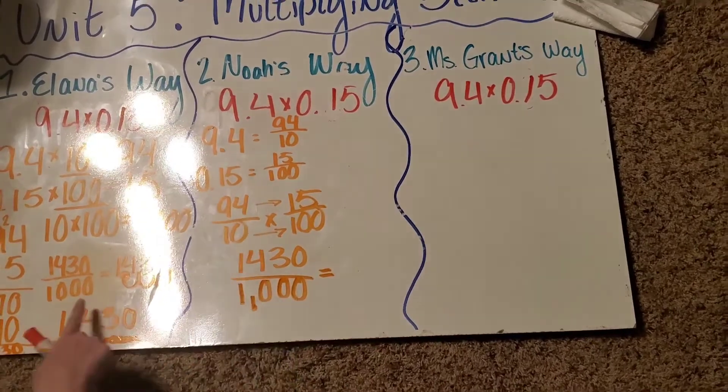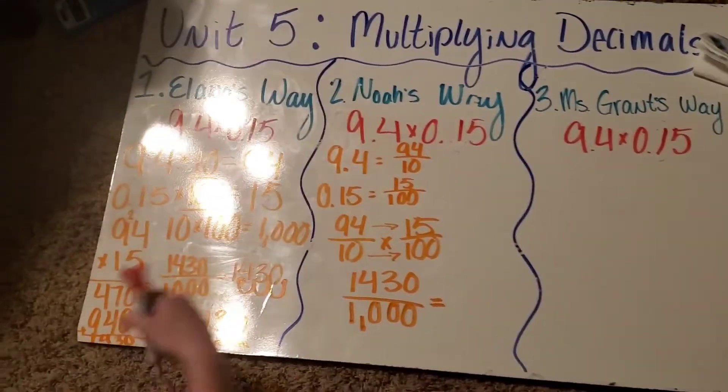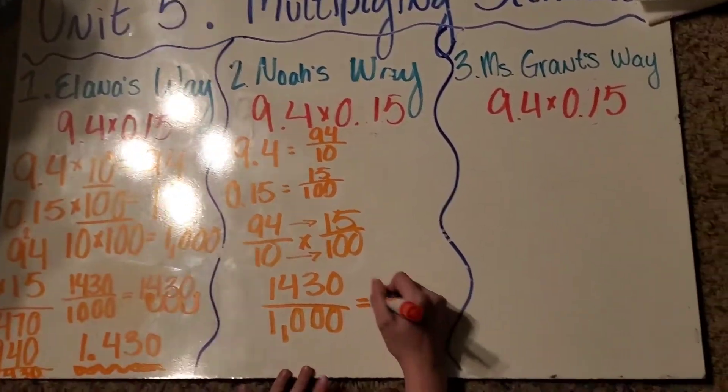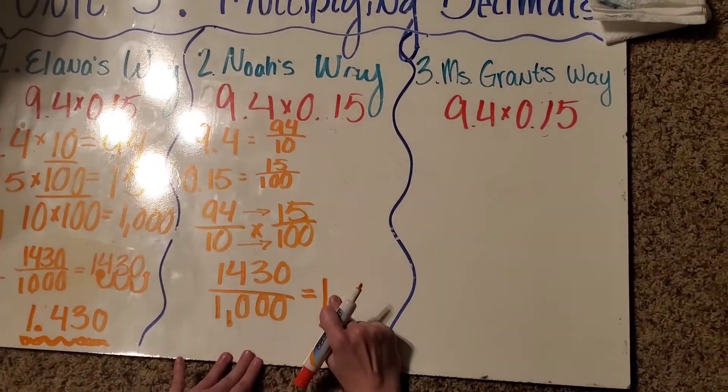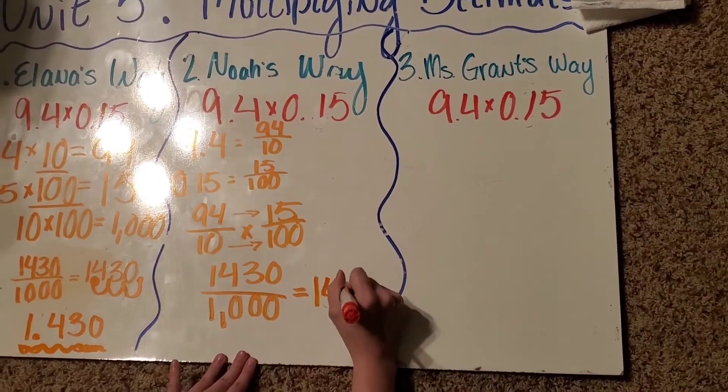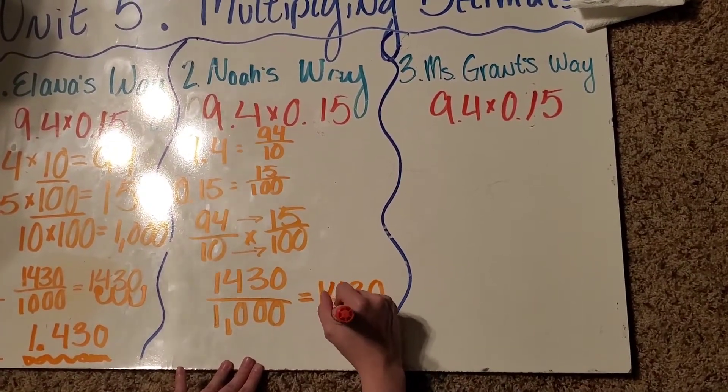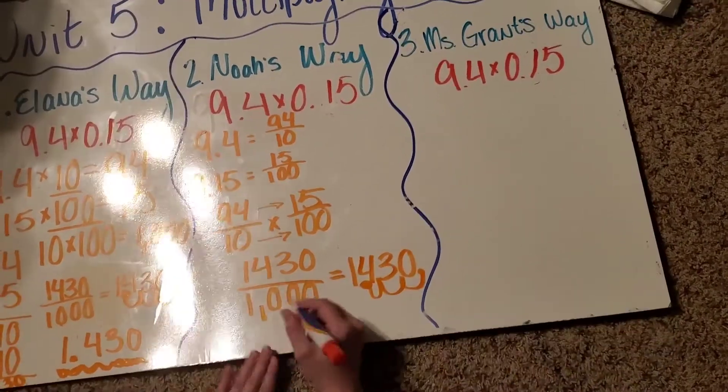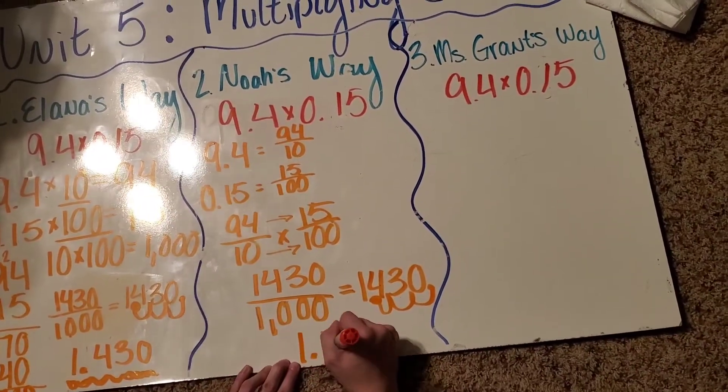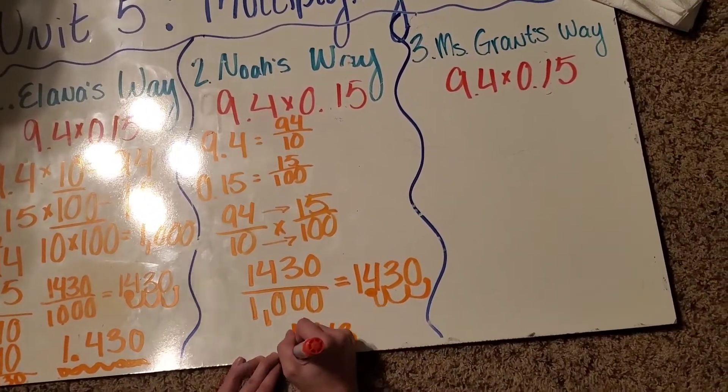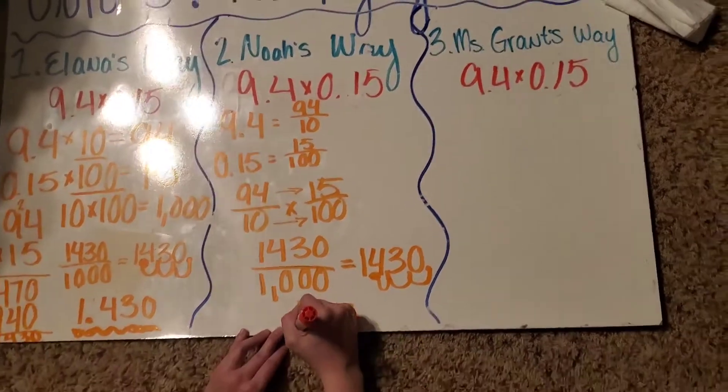So, we get the same exact thing as we did in Elena's way. We should, because it's the same exact problem. So, same thing with this, decimals in the back, and we move it three spots. So, we still get 1.43 for this.